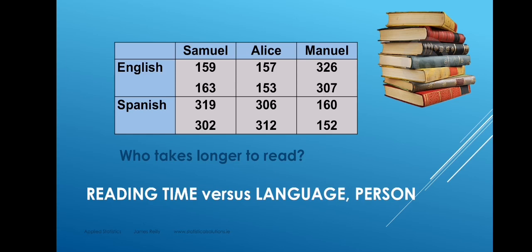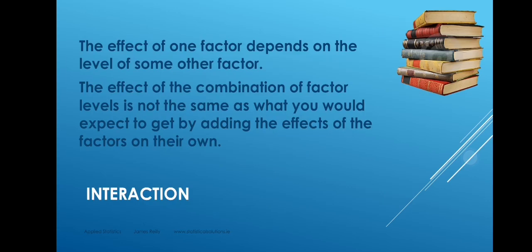The effect of the person depends on the language. In a two-factor experiment, it can happen that not only would factor one have an effect on the response or factor two have an effect, but factor one and factor two in combination could have an effect. We notice in the table that Manuel reading in Spanish is surprisingly fast. We call this feature interaction — interaction means the effect of one factor depends on the level of some other factor. Another way to describe this is to say that the effect of the combination of factor levels is not the same as what you would expect to get by adding the effects of the factors on their own.